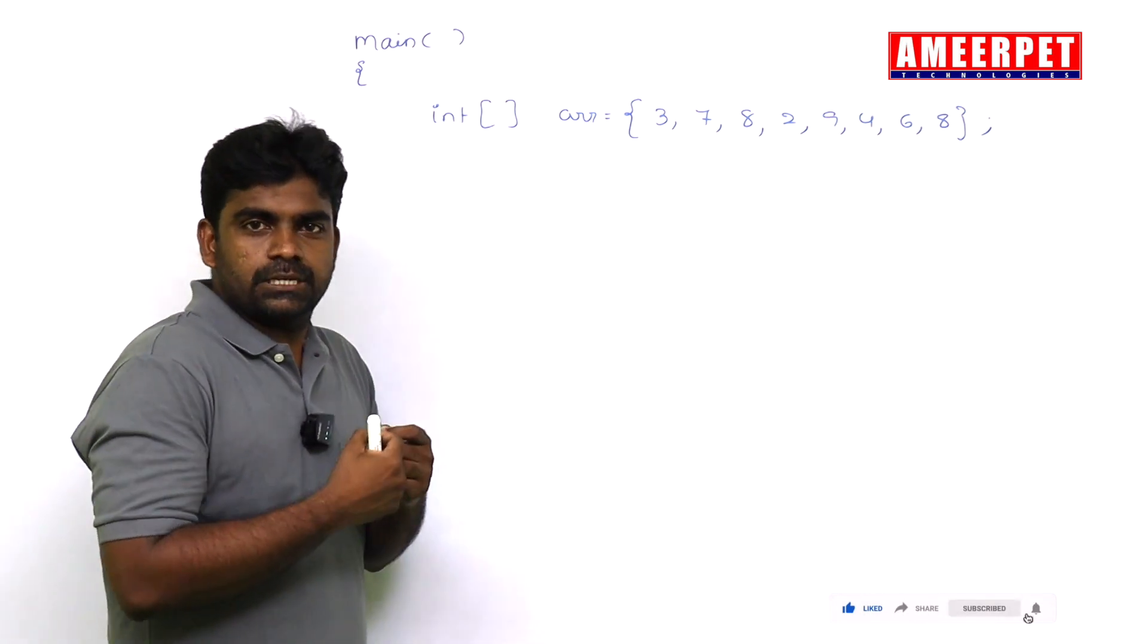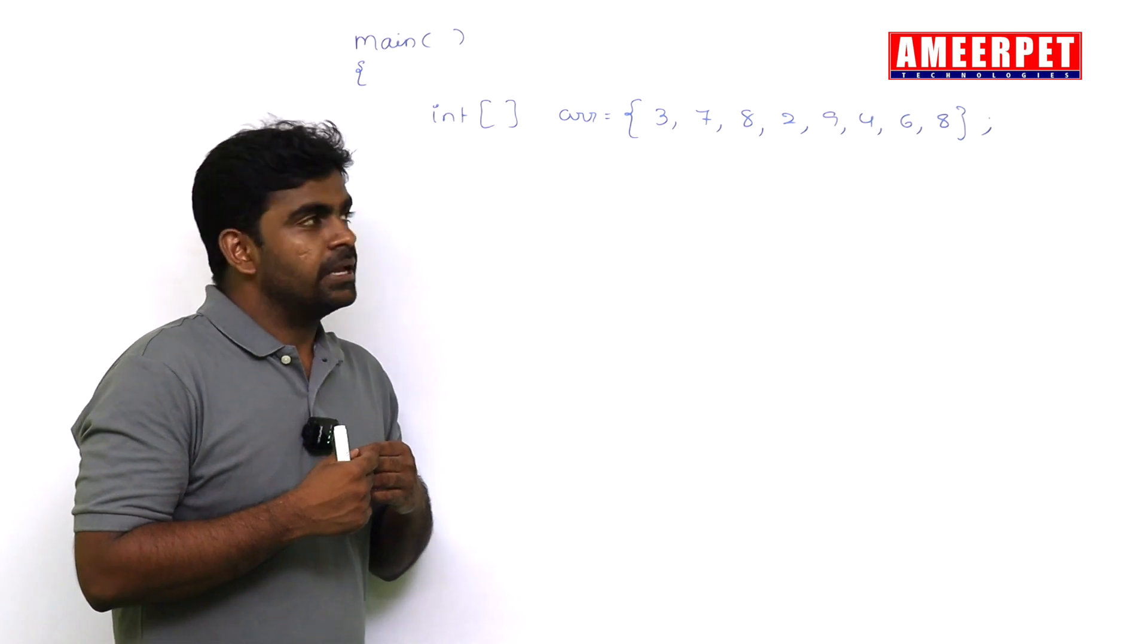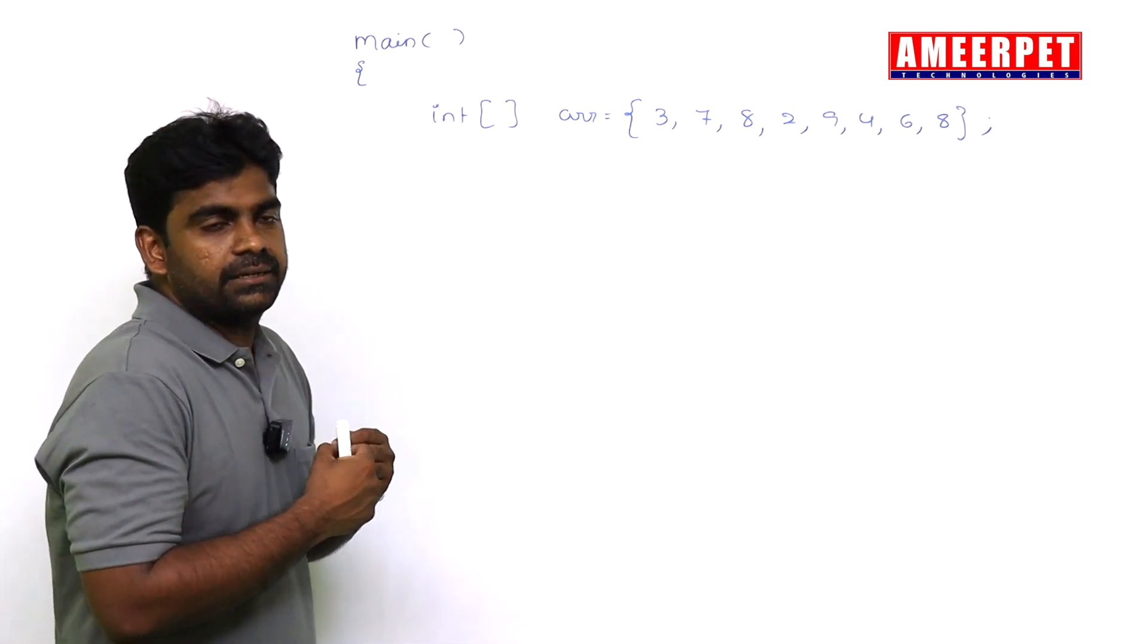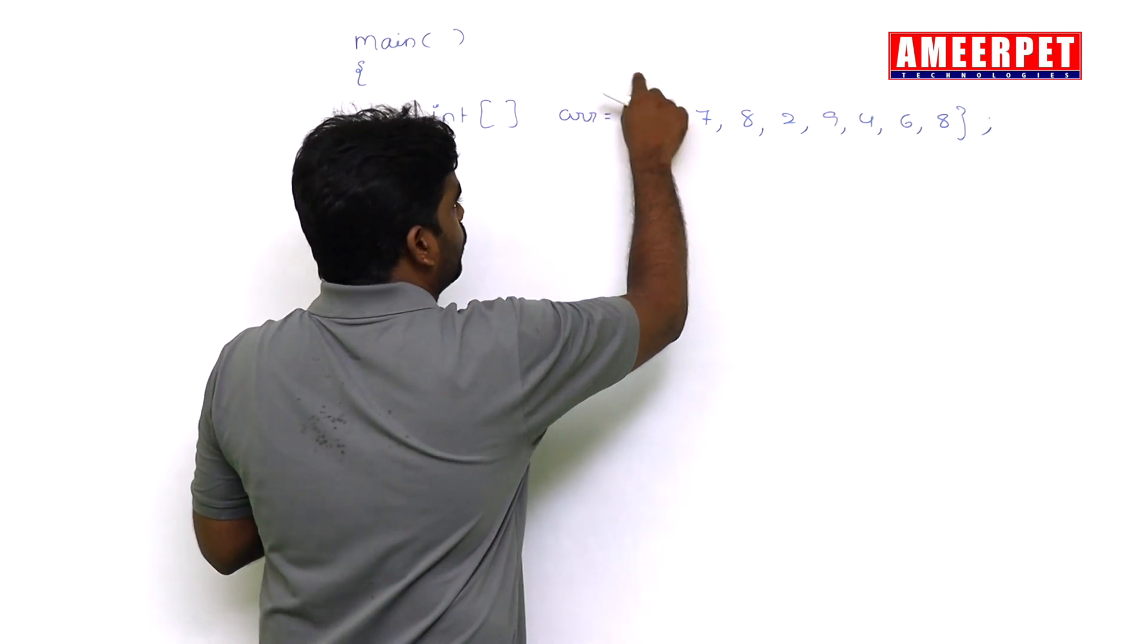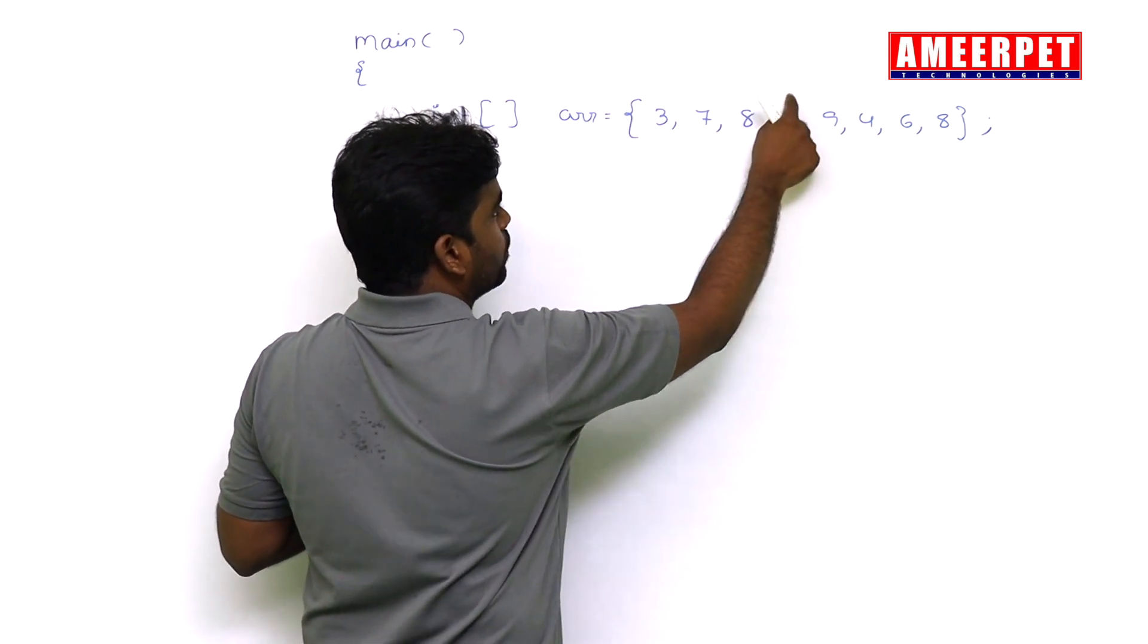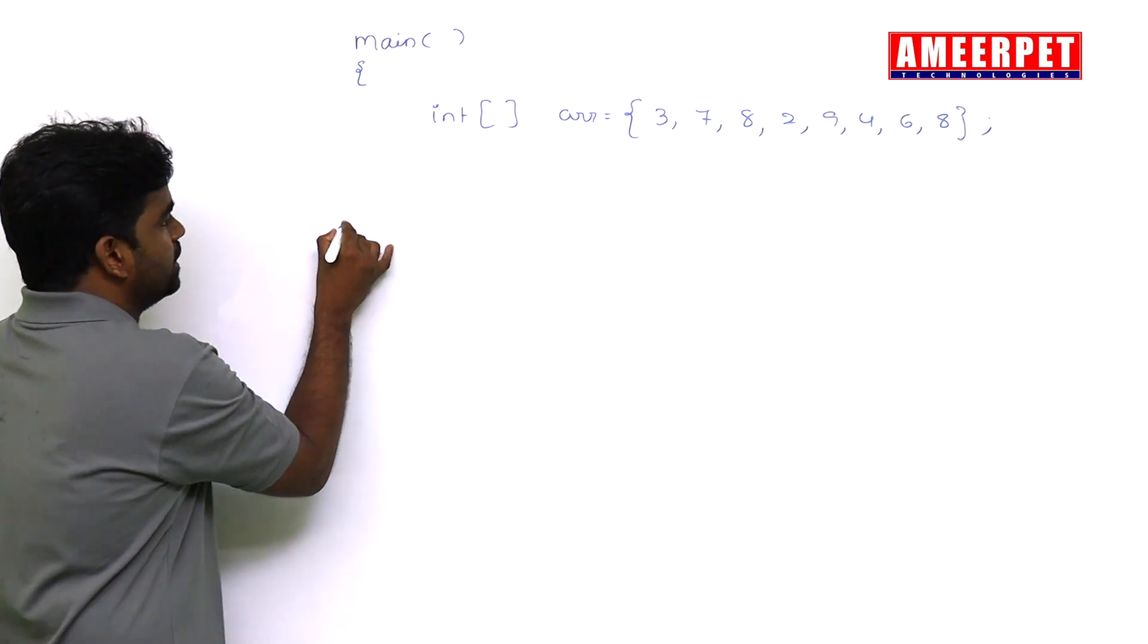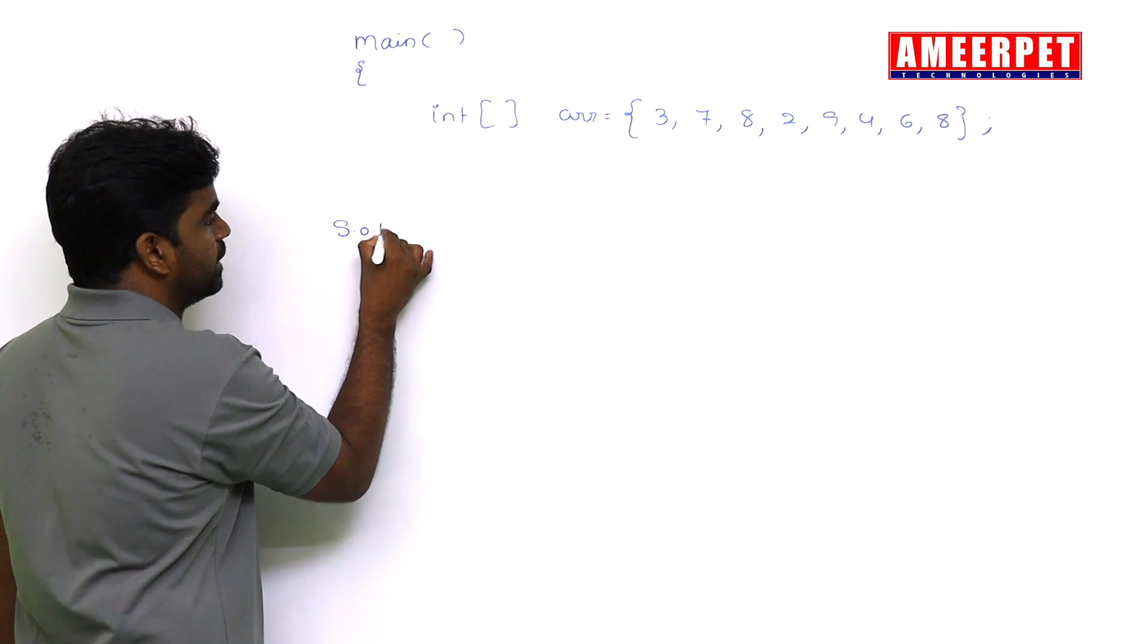If you want to access elements, if you want to display, first of all we need to access the element. So how to access the element? This means ar[0] with their index, ar[1], ar[2], ar[3], ar[4], like that we need to display. It's like System.out.println.